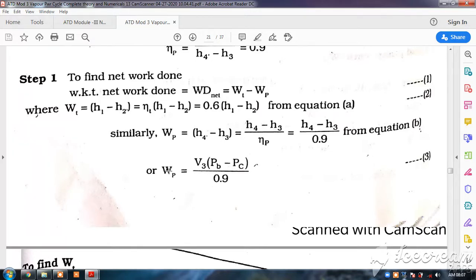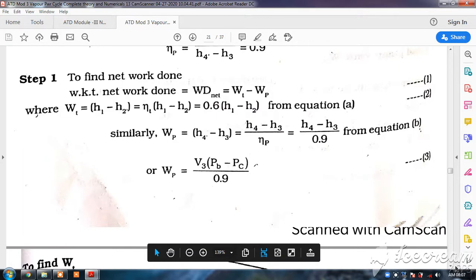Or to find out pump work, we have the standard formula: specific volume at 3 into boiler pressure minus condenser pressure divided by 0.9 into 100. Because if this is in bar, we have to multiply by 100 to convert into kilojoules.